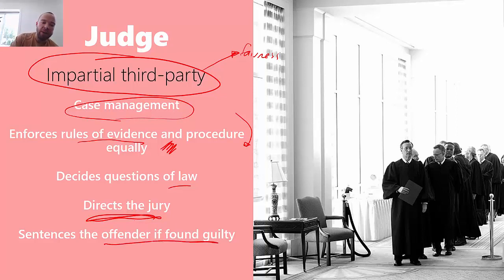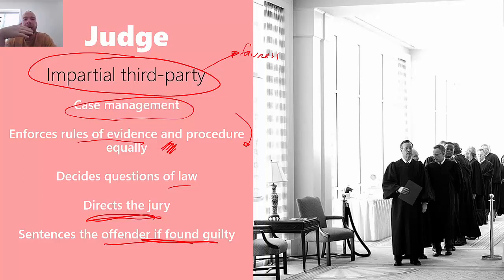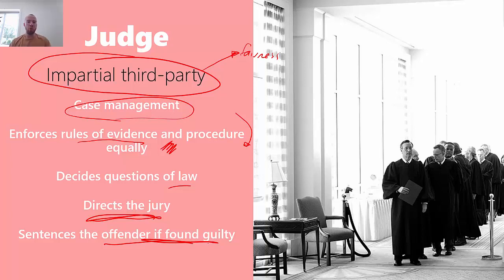If an offender is found guilty, the judge will sentence them. So in summary, if asked about the role of the judge: they enforce rules of evidence and procedure equally, deciding whether evidence is admissible; they do case management - timetabling witnesses, impanelling a jury, holding directions hearings; they direct the jury, explaining the law and elements to be proved, telling them to disregard certain things. There are five distinct roles, plus the catch-all of impartial third party.